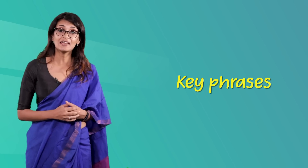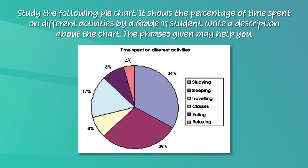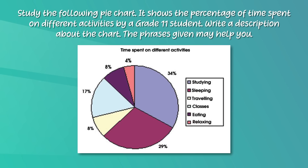When you get a question like this, the first thing you need to do is read the question carefully and pull out the key phrases. To begin with, you are asked to study the pie chart, which means you have to analyze it. You are also asked to look at the percentages of different activities, and finally to write a description. Certain phrases have been given to help you write it, so don't worry.